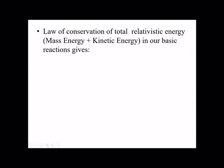The law of conservation of total relativistic energy includes both mass energy and kinetic energy. The basic conservation equation is: mass energy plus kinetic energy of the projectile, plus mass energy plus kinetic energy of the target, equals the mass energy plus kinetic energy of the first product nucleus, plus the mass energy plus kinetic energy of the second product nucleus.